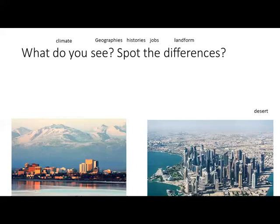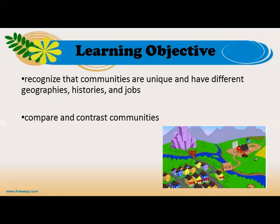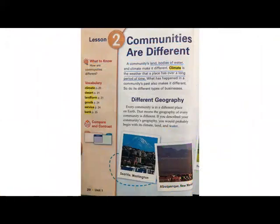The vocabulary you will come across in this lesson includes: climate, geography, histories, jobs, landform, and desert. Don't worry, we're going to go through all these terms as we read. By the end of this lesson you will be able to recognize that communities are unique and have different geography, histories, and jobs. You will also be able to compare and contrast communities. The guiding question is: how are communities different?